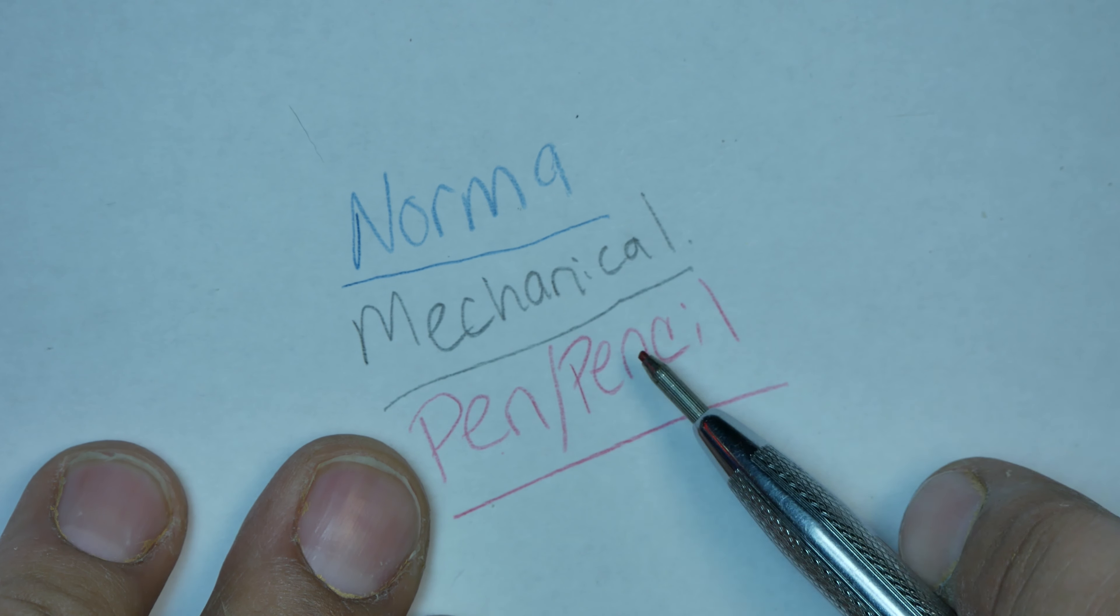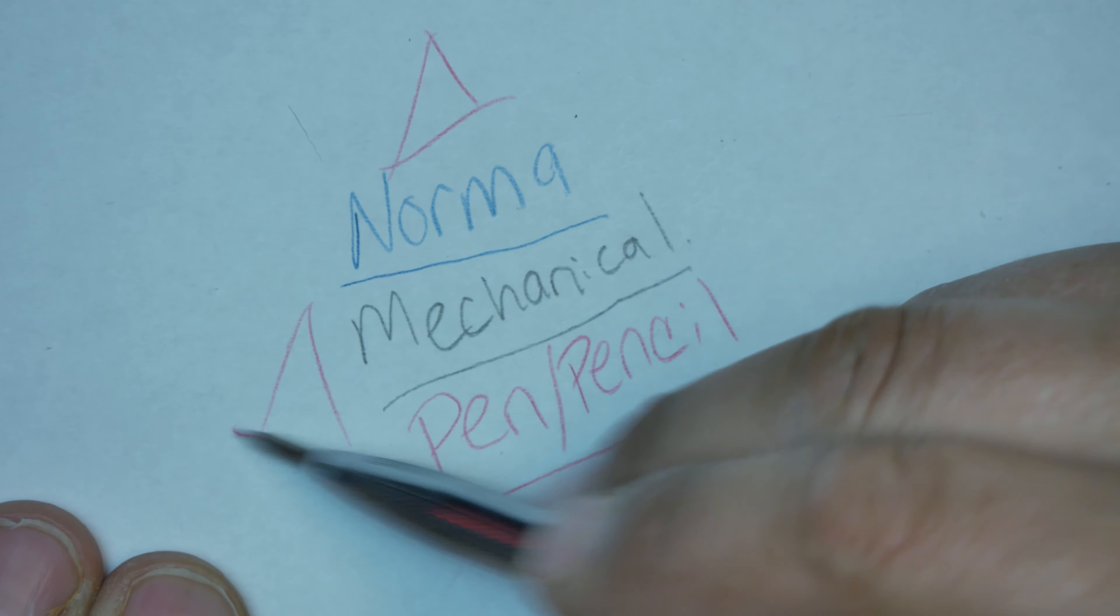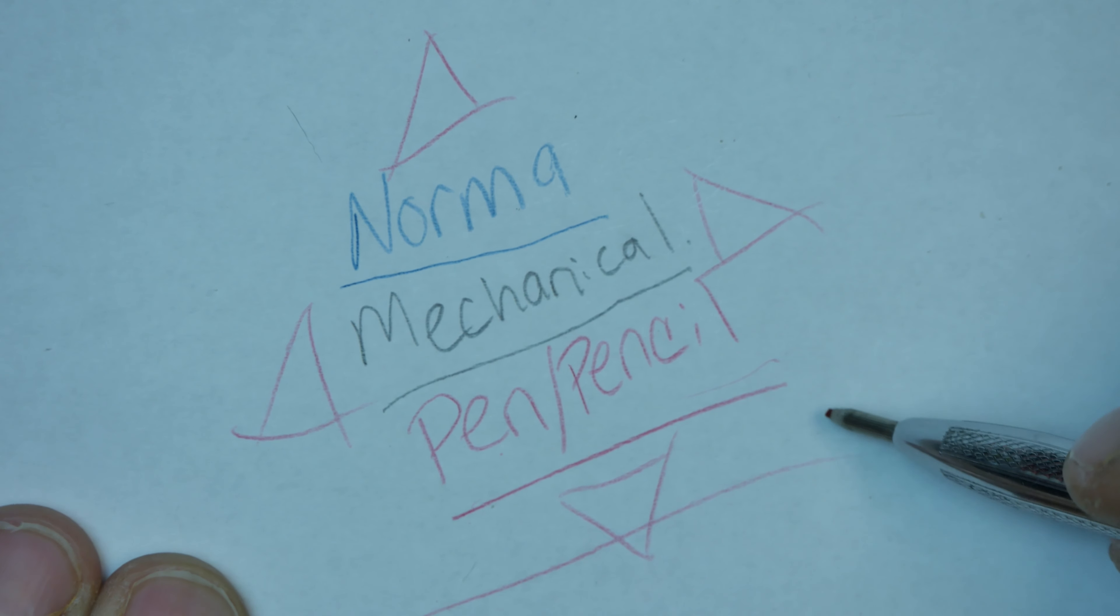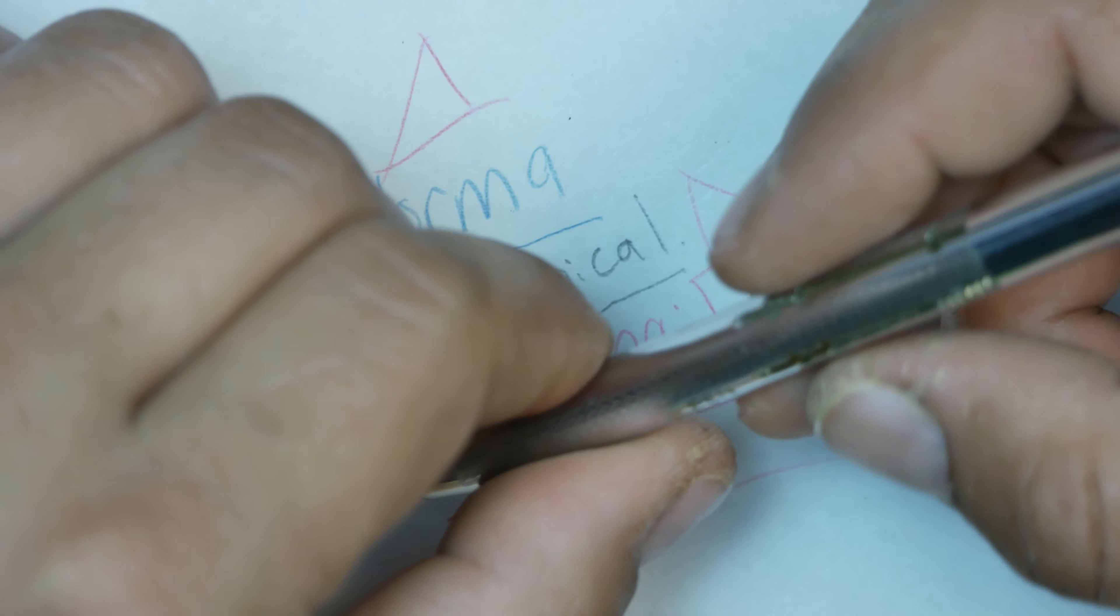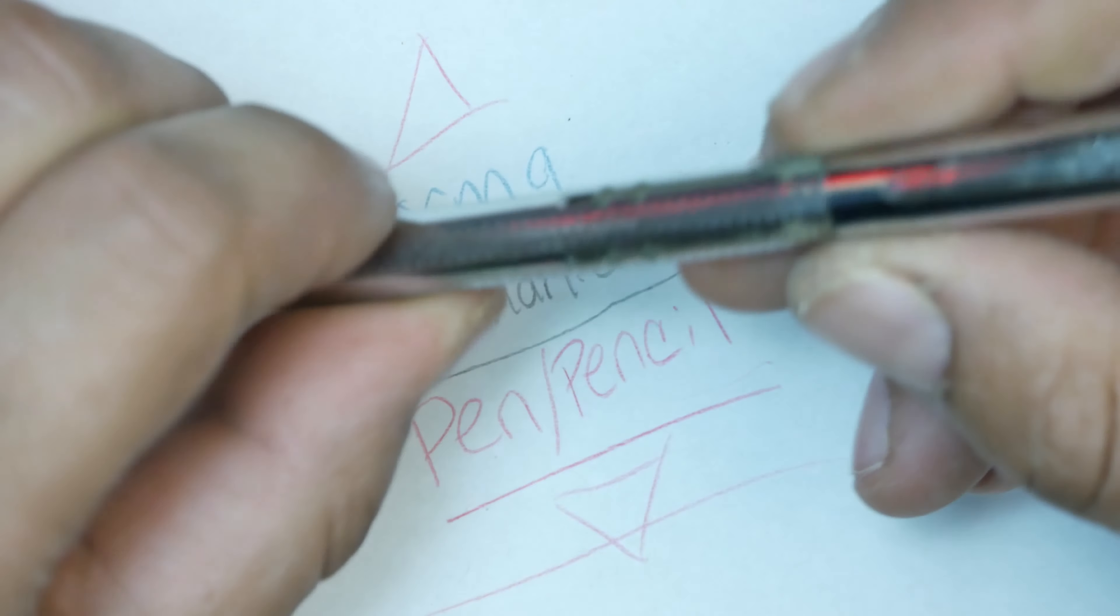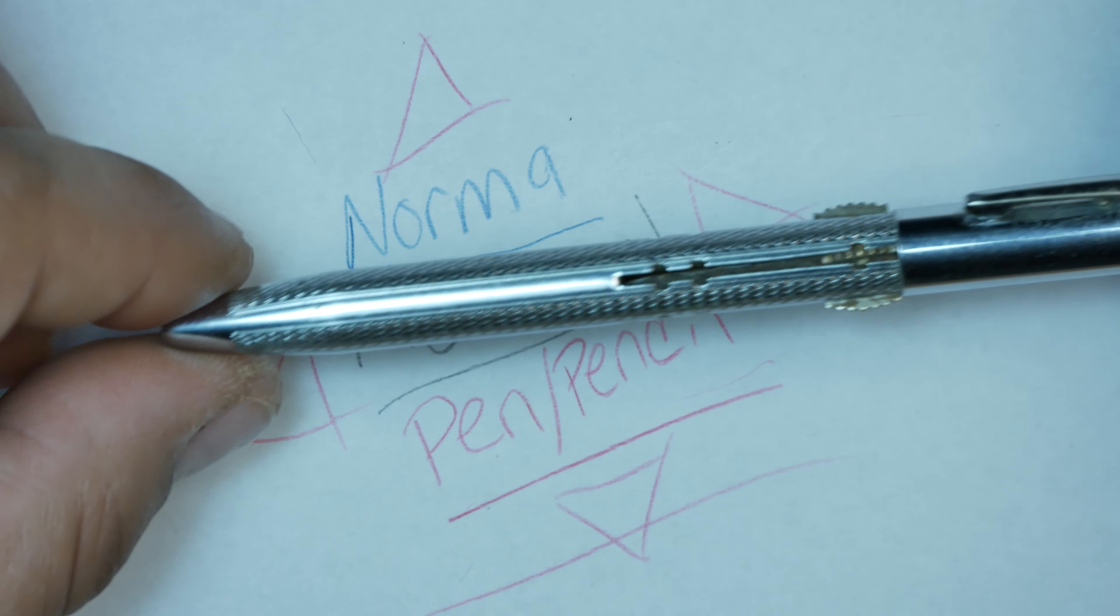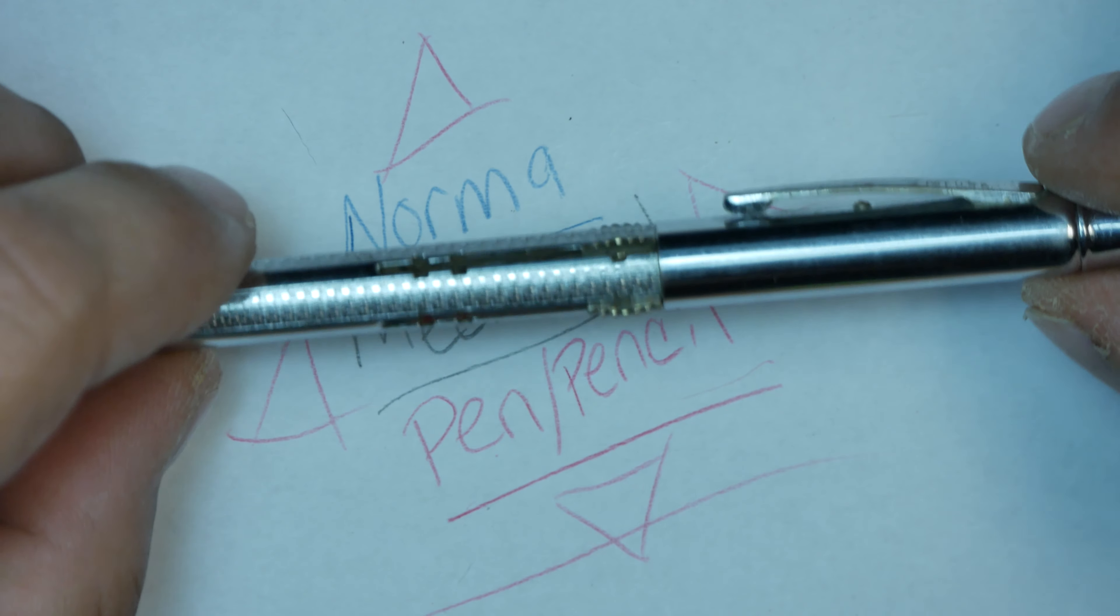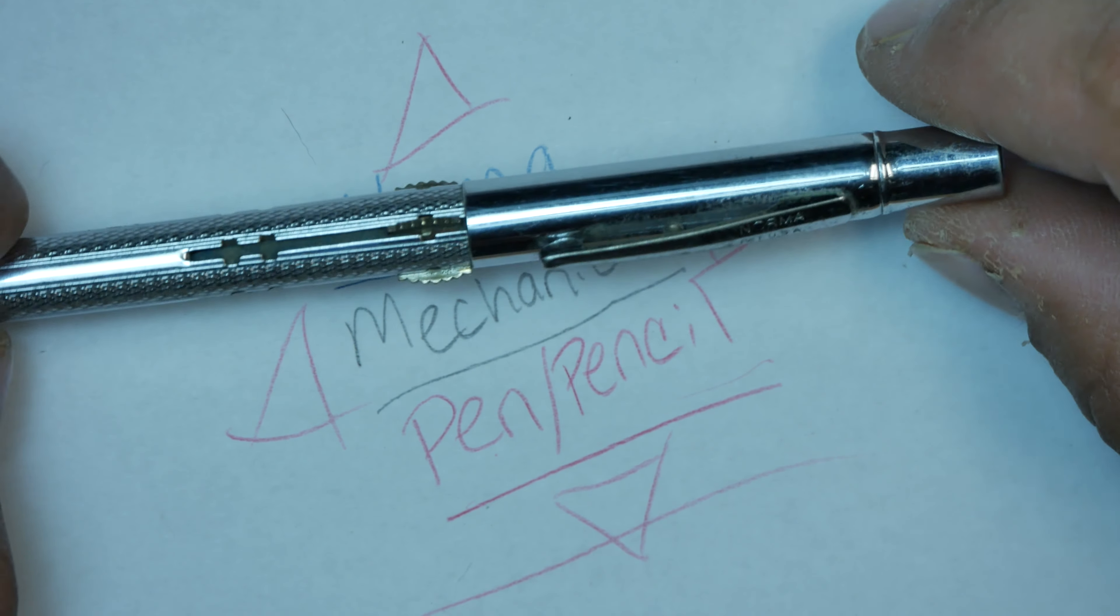Pen, pencil. There it is, the four-way Norma mechanical pen/pencil which still works today. Valued at approximately one hundred dollars even though it's old, even though it's used, even though it's from 1950.